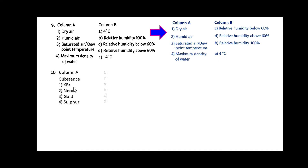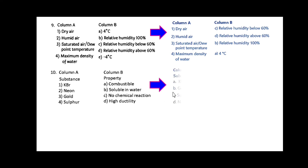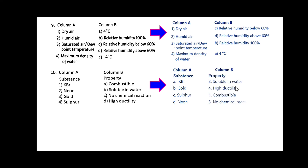Column A gives substances: KBr (potassium bromide), neon, gold, and sulfur. Properties are given in column B. The match is: potassium bromide — soluble in water; gold — high ductility; sulfur — combustible; neon — no chemical reaction.